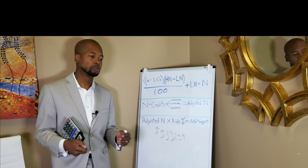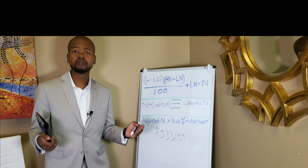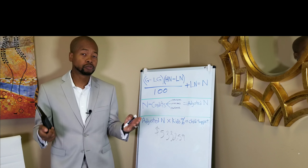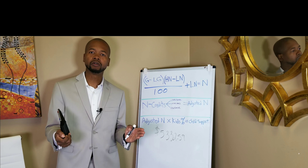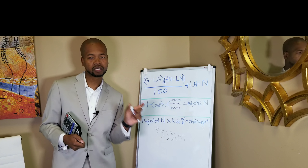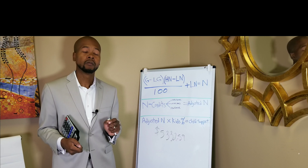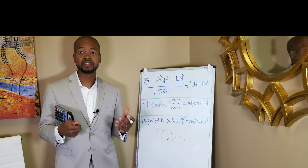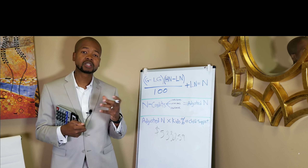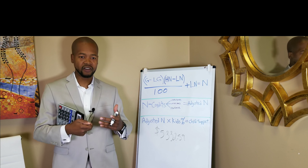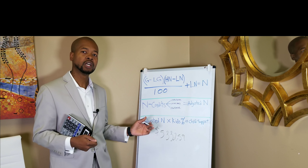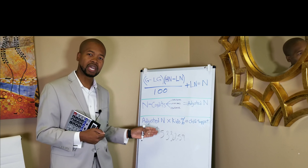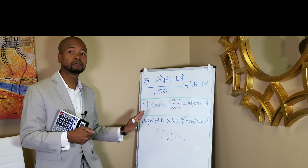For example, if an obligor makes $60,000 a year, to get the average gross income each month, just divide it by 12. Or if you have a tax return for the end of the year and you have a gross sum for the whole year, again, just divide it by 12 to get an average. I may do another video in the future on how to get to this average gross income each month, but this is the place you start — you have to have this number to begin this process.